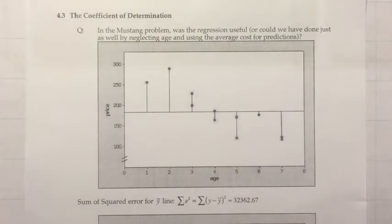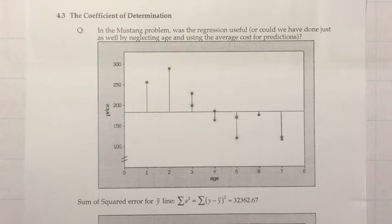Section 4.3: the coefficient of determination. Let's look at a question. In the Mustang problem, was the regression useful, or could we have done just as well by neglecting age and using the average cost for predictions? Suppose you have seen the prices of 12 randomly selected Mustang GT convertibles, and somebody says they're going to pick a 13th one and wants you to guess how much it will cost. What would be your strategy for guessing the cost?